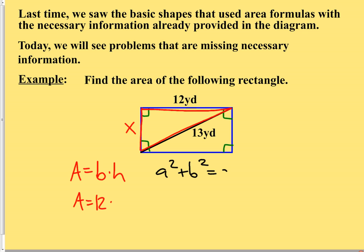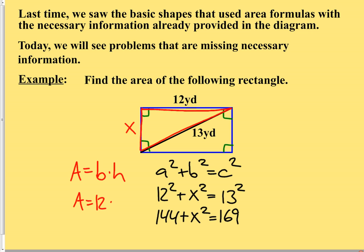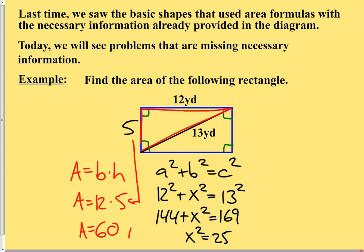So a² + b² = c². The two legs of our triangle are 12 and x, and the hypotenuse is 13. 12² is 144, x² is still x², and 13² is 169. Subtracting 144 from both sides gives us x² = 25. Taking the square root of both sides, x = 5. That's our missing side length. Area is 60, the units were yards, and since area is two-dimensional, the answer is 60 square yards.